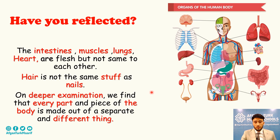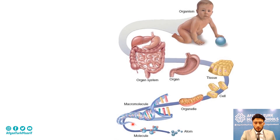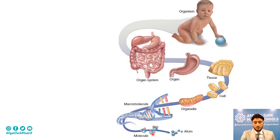We will start from the introduction to the cell. As you see this picture, at the start you can see the atom, and at the end you will see the organism. The hierarchy arises like this: atoms combine with each other to make a molecule, then different molecules combine together to make macromolecules, and macromolecules produce organelles.